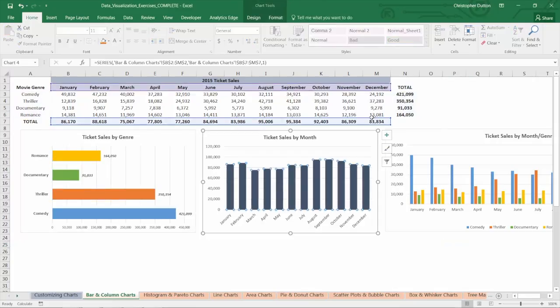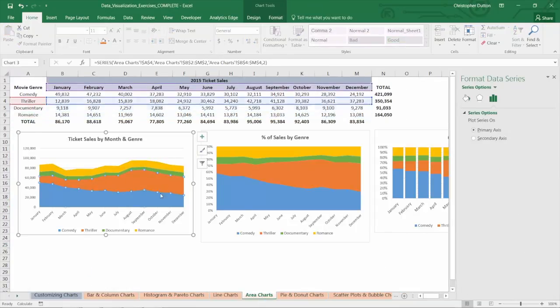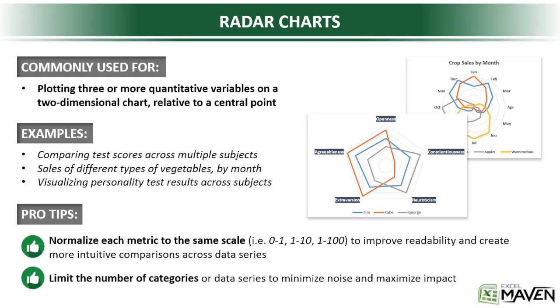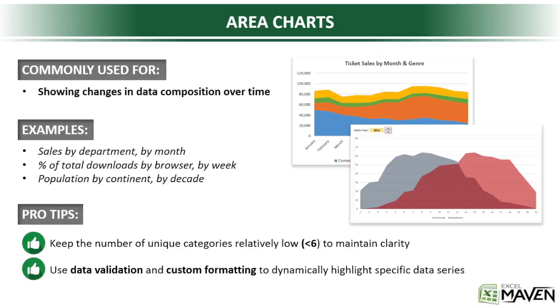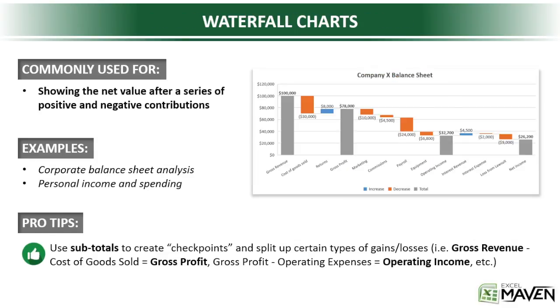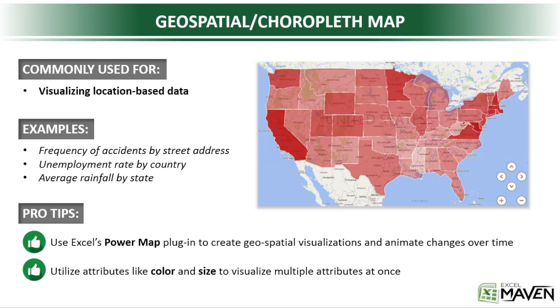We'll kick things off by exploring when, why, and exactly how to use over 20 different chart types. We'll cover your basic bars, columns, lines, and pies, then dive into some of the more exciting stuff like radars, area charts, tree maps and sunbursts, waterfalls, three-dimensional surface and contour charts, and even geospatial heat maps.